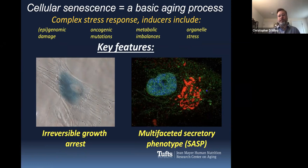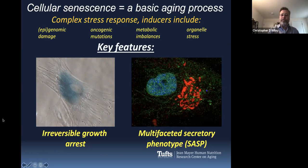The key features of cellular senescence include an irreversible growth arrest. Once a cell senesces, it no longer will ever divide again. It is in a permanent lockdown. Furthermore, senescent cells aren't just going to sit there. They're going to secrete a bunch of factors, which we call the senescence-associated secretory phenotype, or SASP, which is a combination of chemokines, growth factors, proteases, and other molecules that can cause disease.